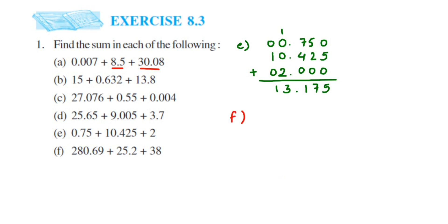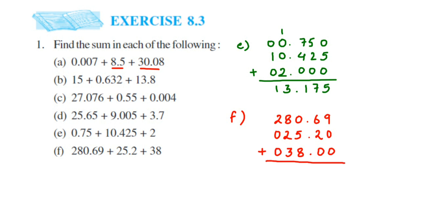Last question: we have 280.69. The next is 25.2 — line up with the decimal, 25 on the left side and 2 on the right, place zeros in empty spaces. The next is 38, a whole number — write it on the left side of the decimal and put zeros. Now add it: 9; 6 plus 2 is 8; decimal point; 8 plus 5 is 13, carry 1; 8 plus 2 is 10, plus 3 is 13, plus 1 carry is 14; 2 plus 1 is 3. So the answer is 343.89. That's it — if you have any questions or doubts, drop a comment. Thank you so much for watching!